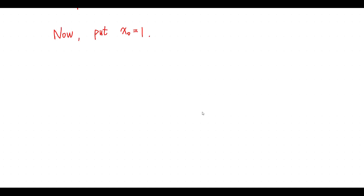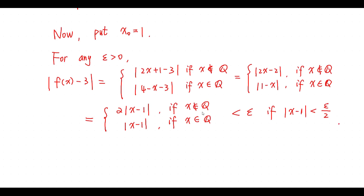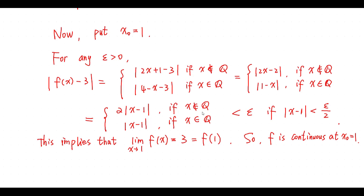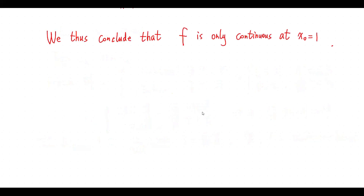We thus conclude f is not continuous at any point not equal to 1. Now consider the case x0 equals 1. For any epsilon greater than 0, if the absolute value of x minus x0 is less than epsilon over 2, then the absolute value of f(x) minus 3 is less than epsilon. This says f is continuous at the point 1. We thus conclude f is only continuous at the point 1.